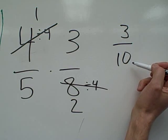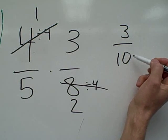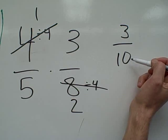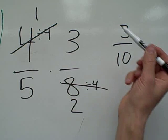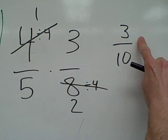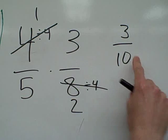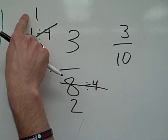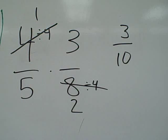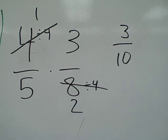Three-tenths. If you remember, we got three-tenths on the fraction before, but now we didn't have to reduce our answer because it was already reduced as we cross-divided or cross-canceled. I hope that you can see how cross-dividing is a beautiful process. Thank you very much.